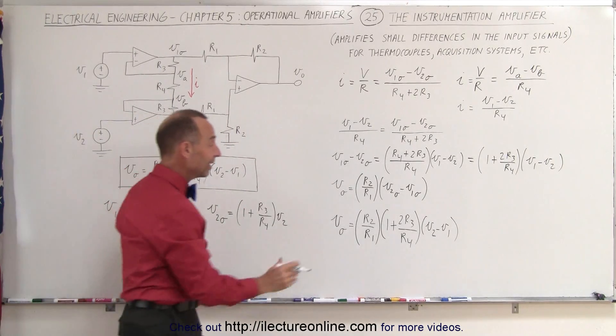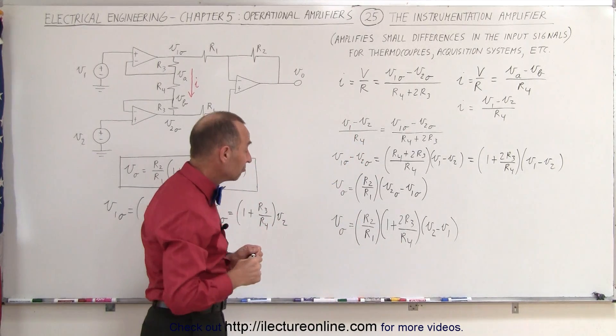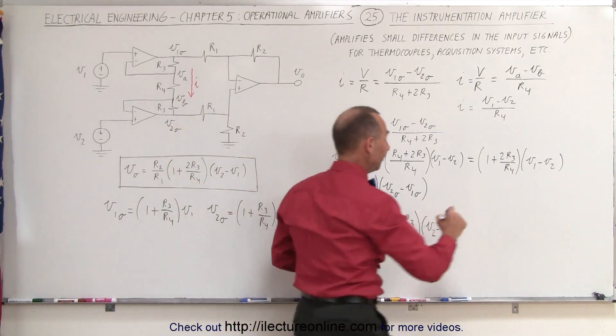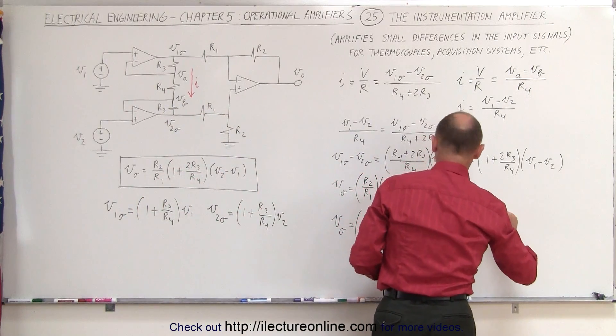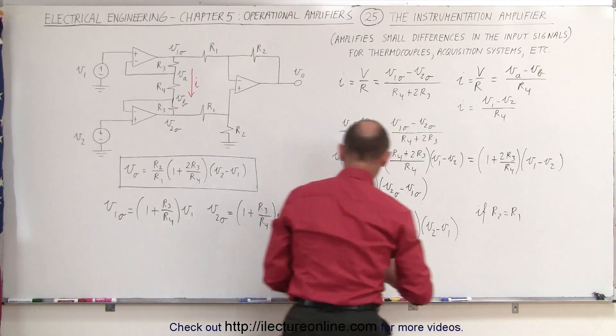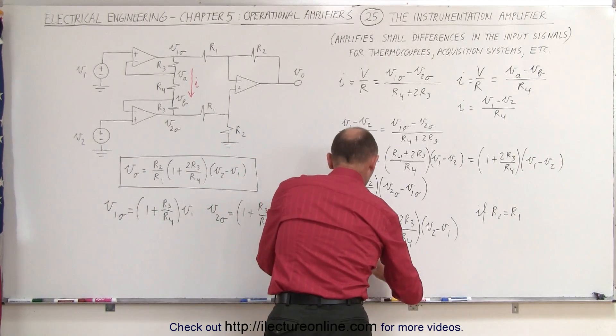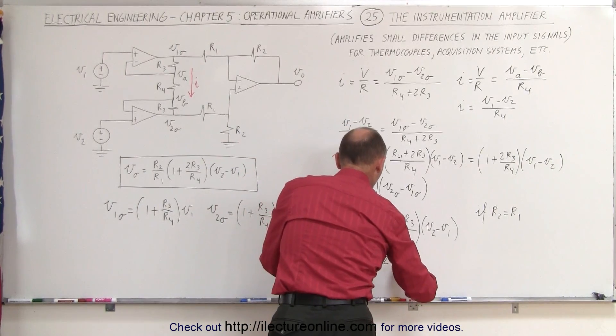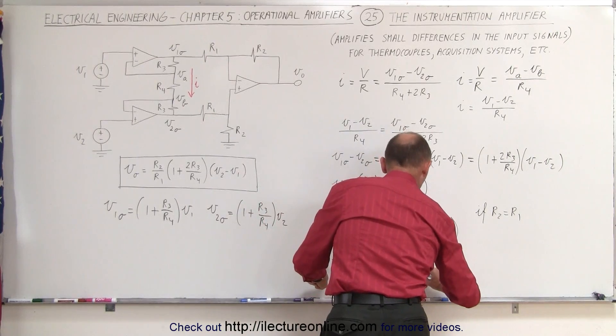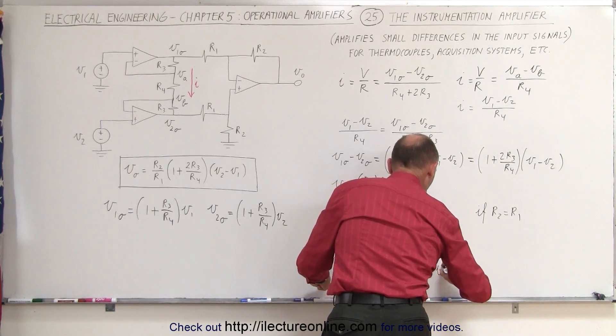So that's where that came from, which means that this quantity here is the gain. Now sometimes you can set R2 equal to R1. If we do that, if we deliberately set R2 equals to R1, then the equation reduces to VO equals, the output voltage is equal to 1 plus 2 times R3 divided by R4, multiply times the voltage difference on the original inputs, V2 minus V1.